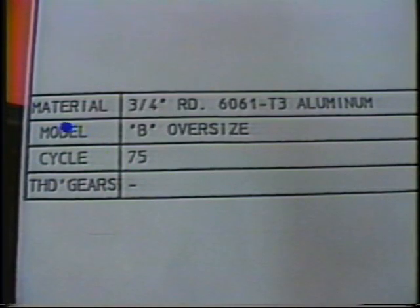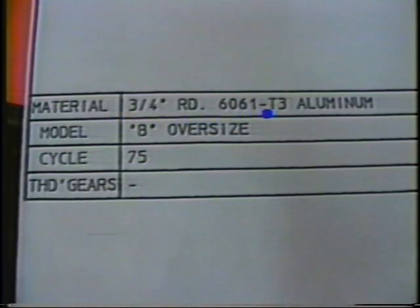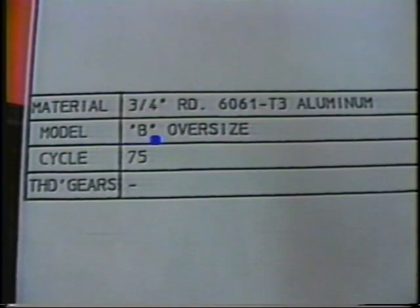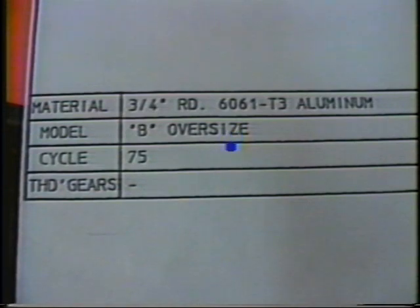In the first column, the material to be machined is specified along with the required size and shape. This is followed by the model of machine designated as regular, oversize, or chucker. Each of these carries the added designation of extended bed, which provides an additional 2 inches of linear tooling area.